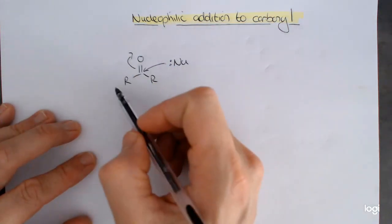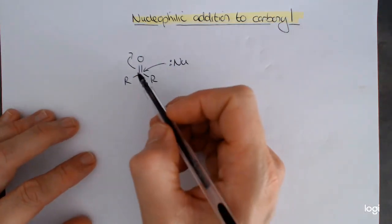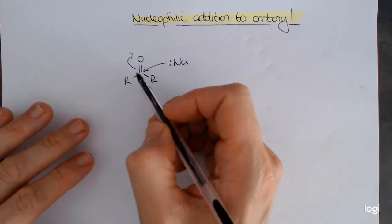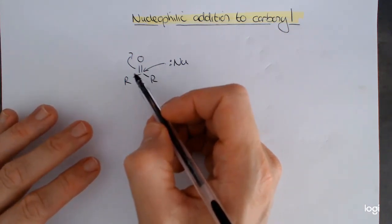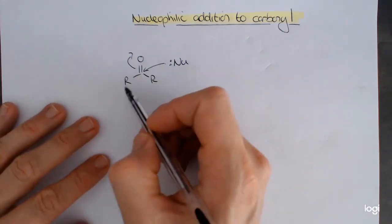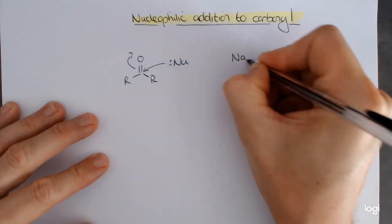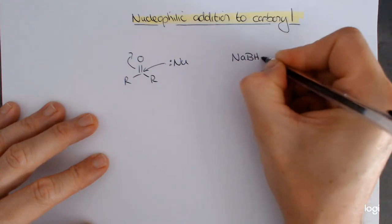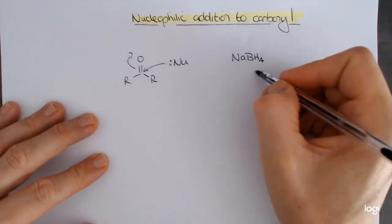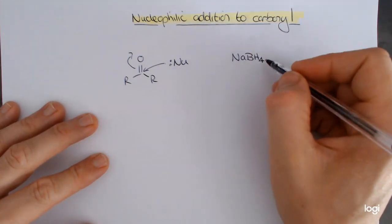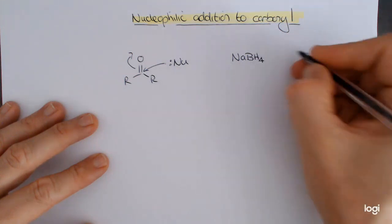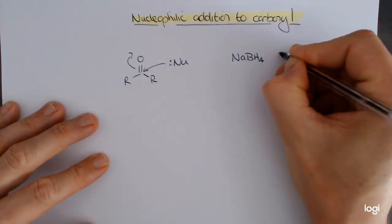So this is the general scheme, and in this two-part video series, there are four different types of nucleophiles that we're going to look at, but today we're going to be looking at the addition of sodium borohydride, which is actually technically a reduction-type reaction. This is the effect of adding an H-minus nucleophile.